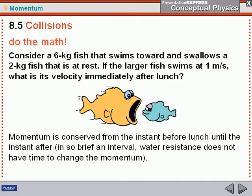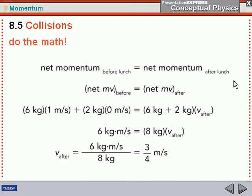This is going to be an inelastic collision, so you're going to conserve the total momentum of the fish before and the momentum of the fish together afterwards. We go through the step-by-step momentum before they collide — before lunch — and the momentum after they collide — after lunch. We've just replaced the word momentum with mass times velocity. Here's the mass of the big fish, the velocity of the big fish, the mass of the little fish, the velocity of the little fish at the start — remember, it's at rest. And that's the before.